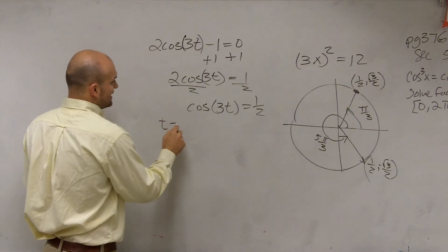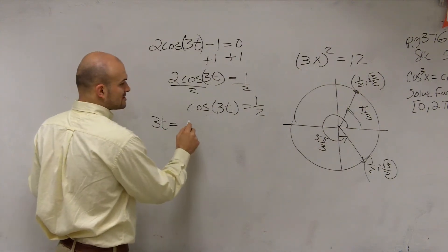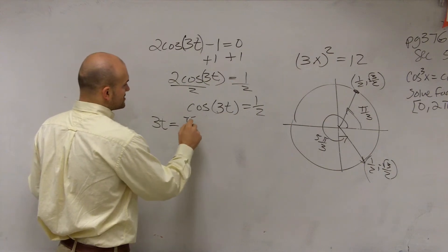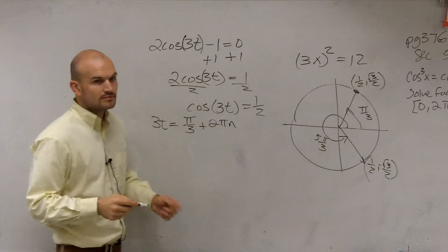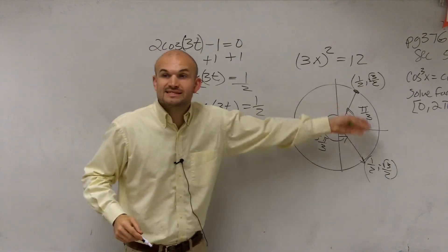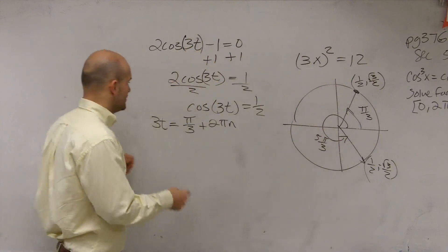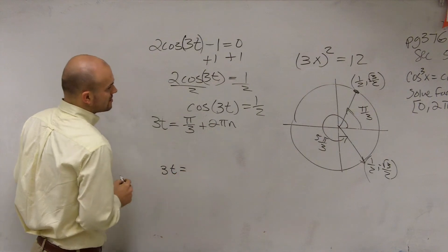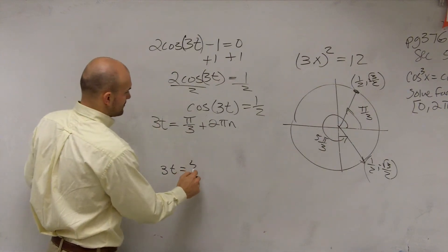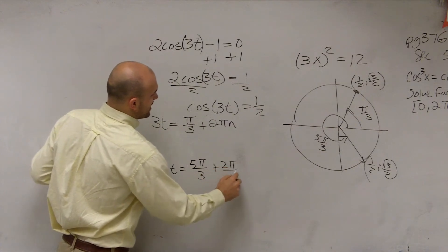So therefore, we can say 3t equals pi thirds plus 2 pi n. Right? Because this answer is going to continue. There's no restrictions on this. So that answer is going to continue. And then also we have 3t equals 5 pi over 3 plus 2 pi n.